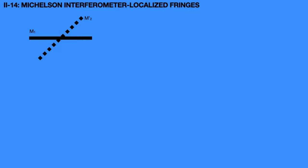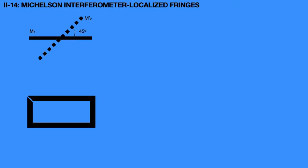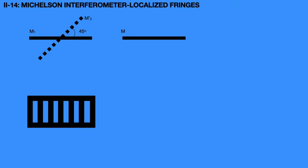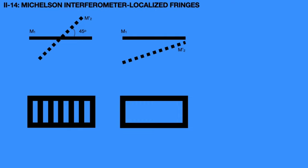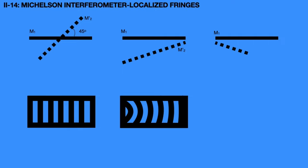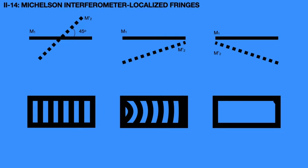If M1 and M2' are making a 45-degree angle and intersect at the middle, then in the telescope we get perfect straight-line fringes. In other cases, when the two mirrors M1 and M2' are inclined differently, curved fringes with convexity towards the thin edge of the wedge are observed. This is the description of localized fringes.